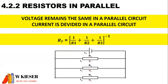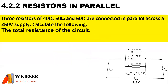For voltage and current in a parallel circuit, we find that voltage remains the same and current is divided. In this example, we have three resistors of 40 ohms, 50 ohms, and 60 ohms connected in parallel across the 250 volt supply.